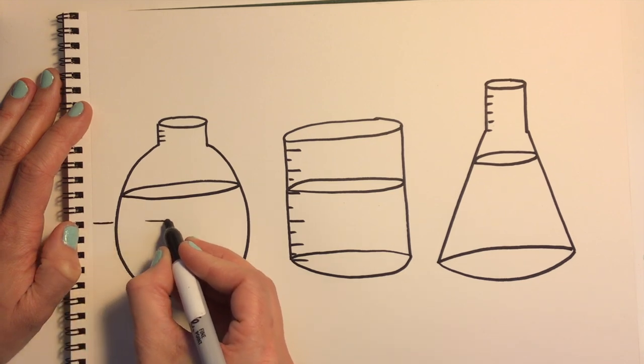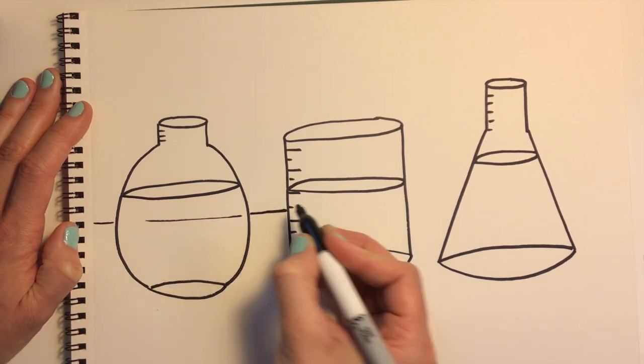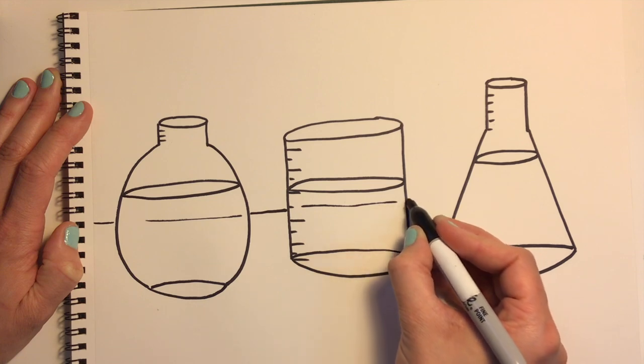Now let's add the tabletop. Since these items are transparent, we want to see a little bit of the table through each of them.